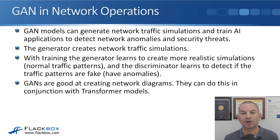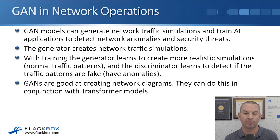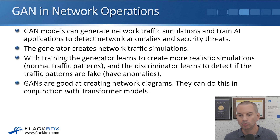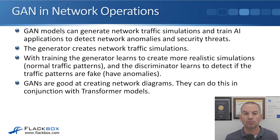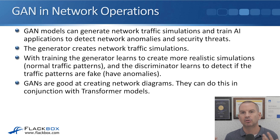GAN models can generate network traffic simulations and train AI applications to detect network anomalies and security threats. The generator creates network traffic simulations, and with training learns to create more realistic simulations that look like normal traffic patterns. The discriminator learns to detect if the traffic patterns are fake or have anomalies. This is a model you can use to train your AI system to identify when network traffic patterns are not normal. GANs are also good at creating network diagrams, working in conjunction with transformer models — you can feed them text like the output of show commands such as show CDP, load configurations, and the GAN can then multimodally create a network diagram image.